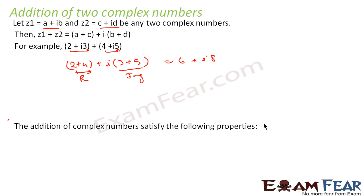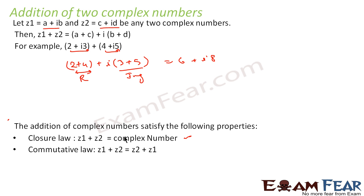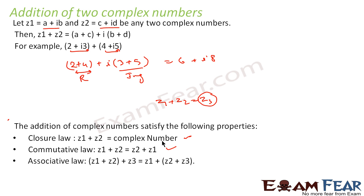Addition of complex numbers satisfies the following properties. Closure law: z1 plus z2 is also a complex number. Commutative law: z1 plus z2 equals z2 plus z1. Associative law: (z1 plus z2) plus z3 equals z1 plus (z2 plus z3) — you get the same result either way.